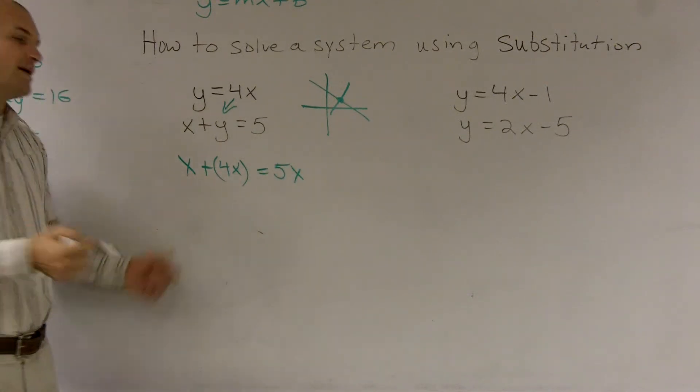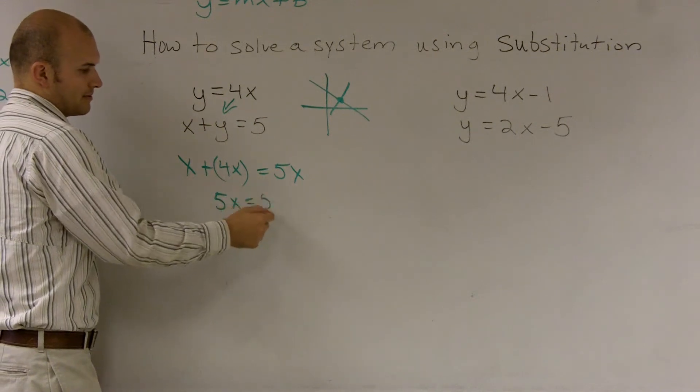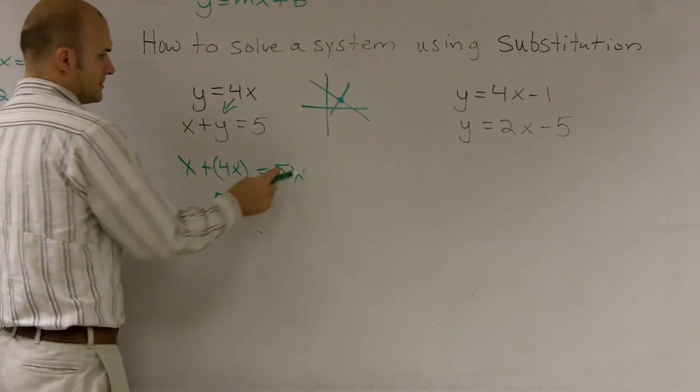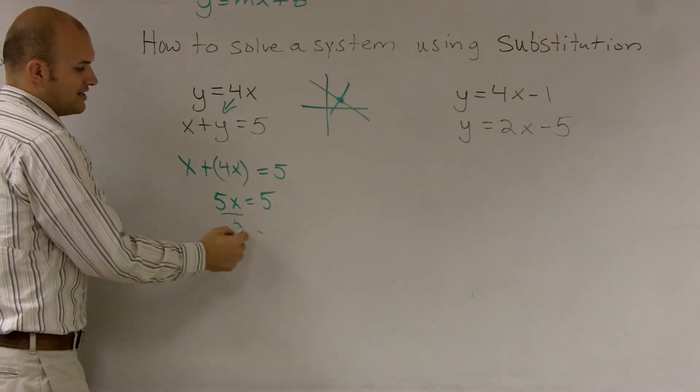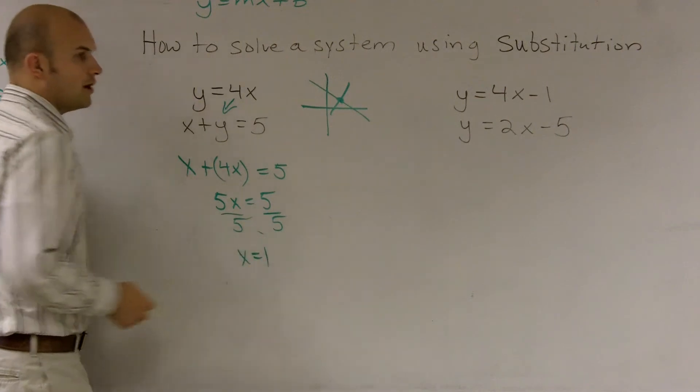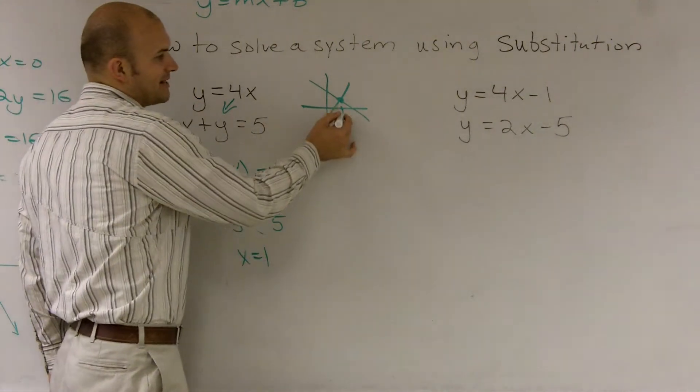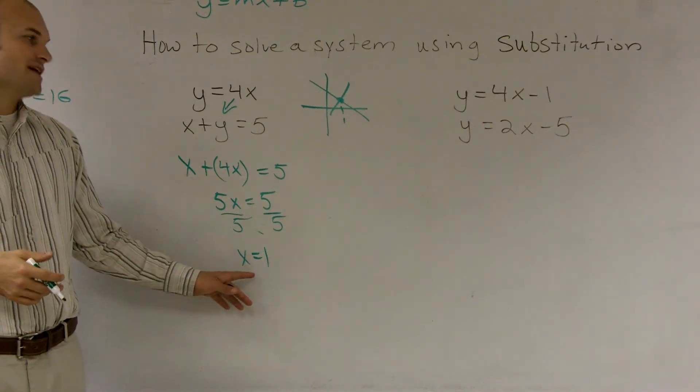So then from there, now I just use my math. I have x plus 4x becomes 5x. So that's five. Then, now to undo my multiplication, I divide by five using the division property of equality. So x equals one. Therefore, I'll determine that this point is one, where they cross. So I know that the x value is at one.